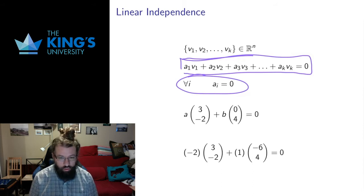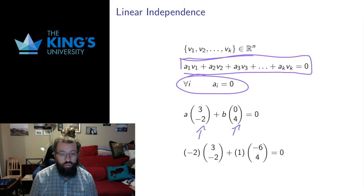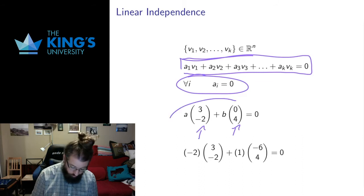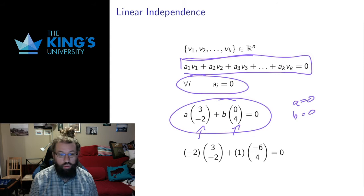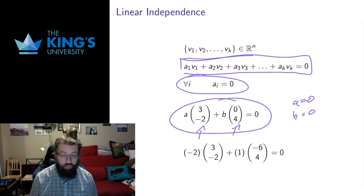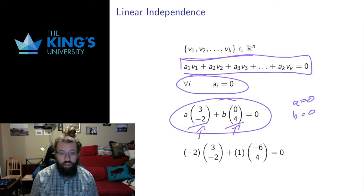Let me make this clear with an example. Say I have the vectors (3, -2) and (0, 4). Then I have this equation. The only way I can make this equation work is if a equals zero and b equals zero. There are no other constants — no special choices of a and b that make this work other than a equals zero, b equals zero. A equals zero, b equals zero always works, setting everything to zero. So this vector is set to zero, this vector is set to zero, add zeros together, you get zero. If it's the only possible solution, we say the vectors are linearly independent.